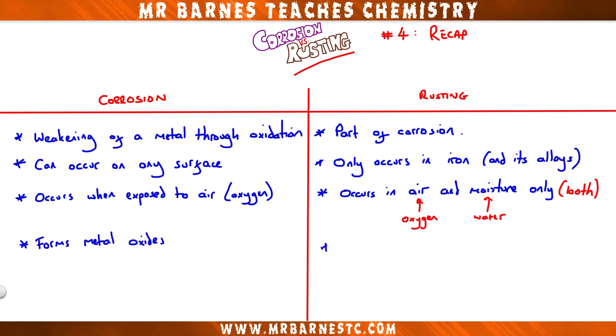And then corrosion forms metal oxides, and rusting only forms iron oxide. And that is everything that you need to know about corrosion and rusting.